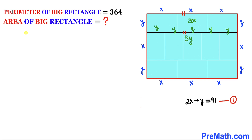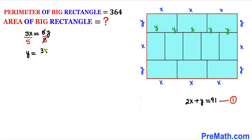So we write down 3x = 5y. Dividing both sides by 5 to isolate y gives us y = 3x/5. Let's call this equation number 2.